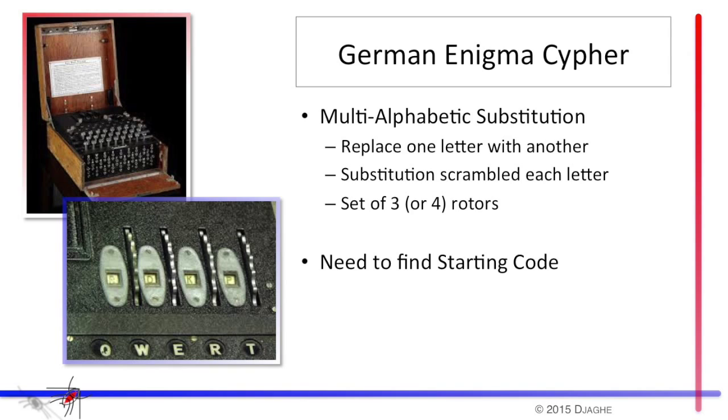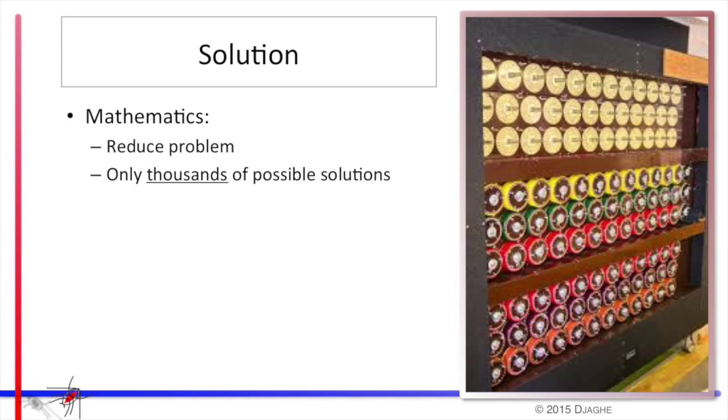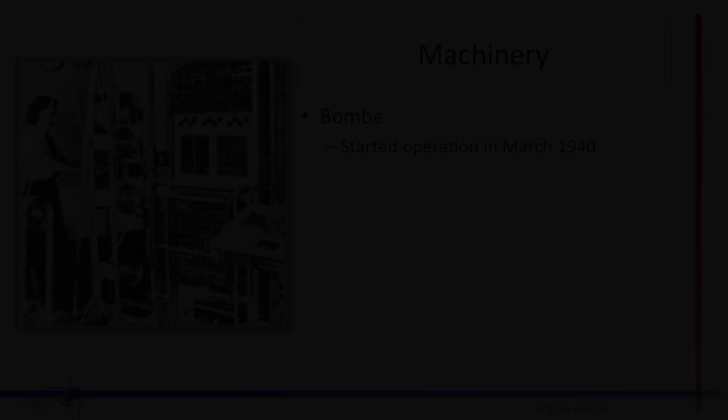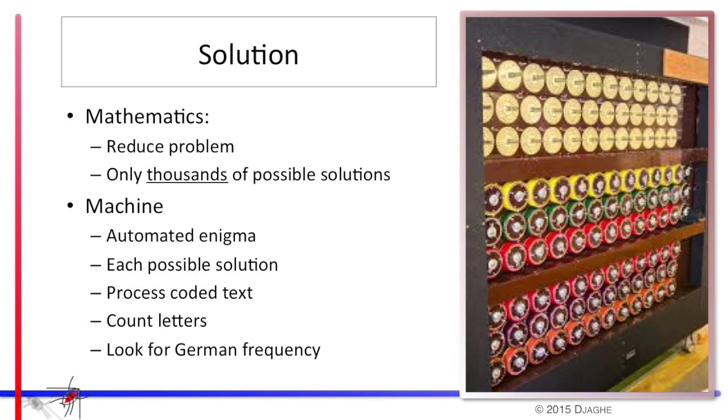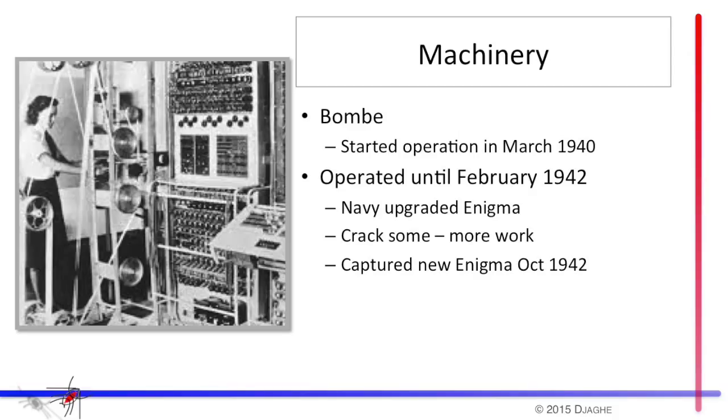In trying to break the German Enigma code, Turing started with the mathematics and was able to reduce the problem of finding the initial rotor settings. Once they had the limited number of settings, they would put the code through an automated Enigma machine, a machine that would decode it whether they had the right code or not, and count the letters that came out. If the letter frequency in the decoded message more or less matched the common frequency of German, the machine would flag it, and a human being would look at the message to see if indeed it was in German. If it didn't match the German frequencies, the machine would go on to the next setting of the rotor. The machine that did this work was called the bomb. It was a mechanical machine and started operation in March of 1940. It operated effectively until February 1942, when the German Navy upgraded its Enigma. The British captured a new Enigma in October 1942, which made the work easier.